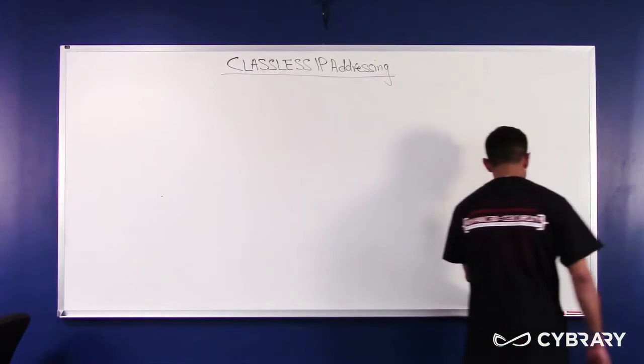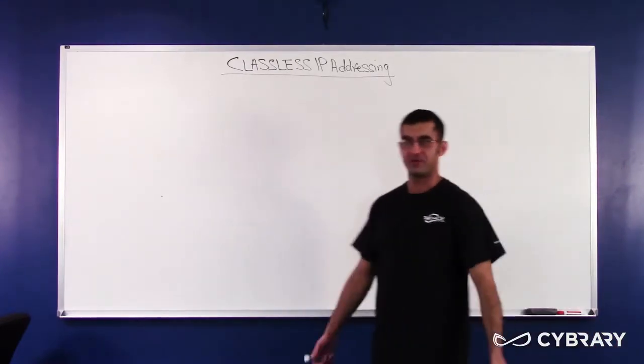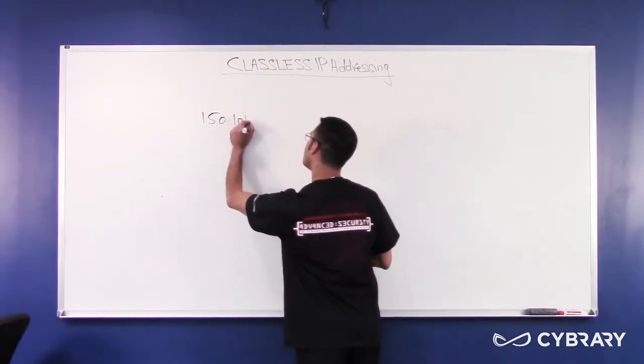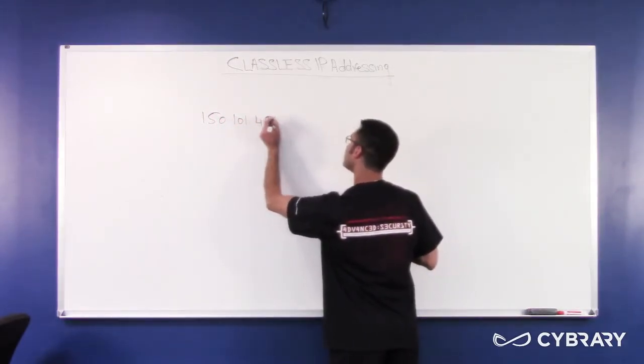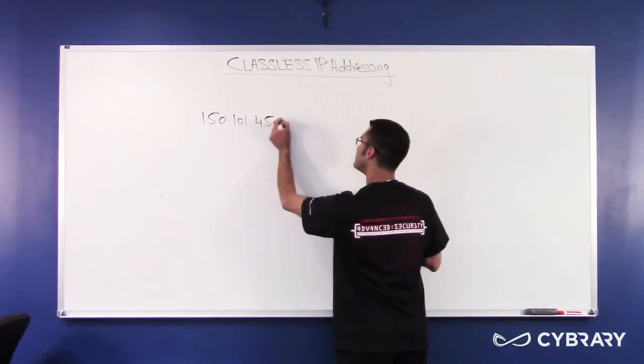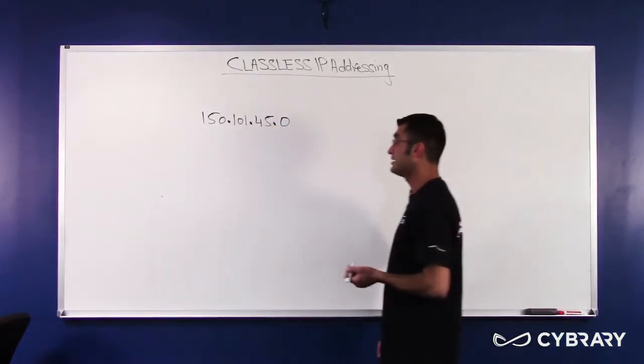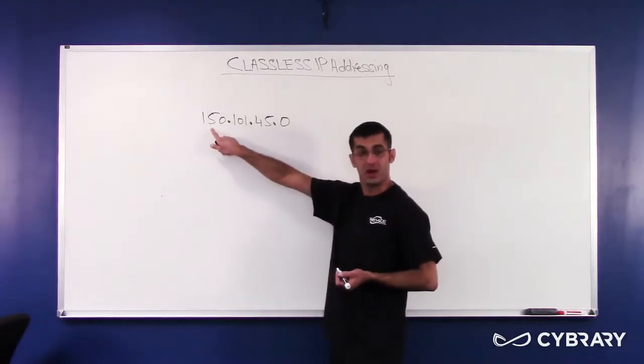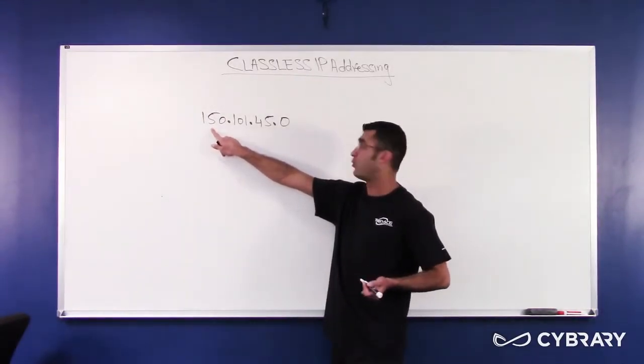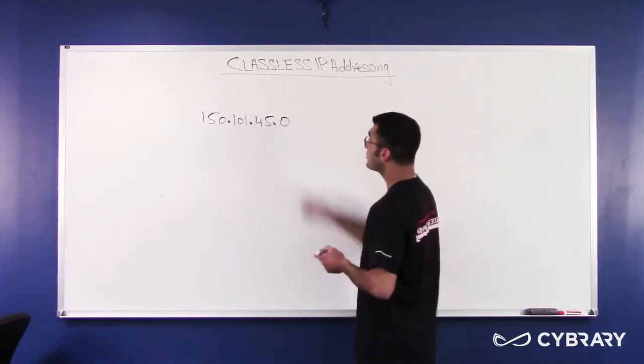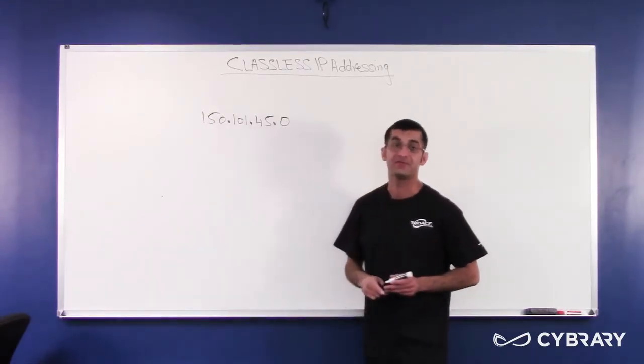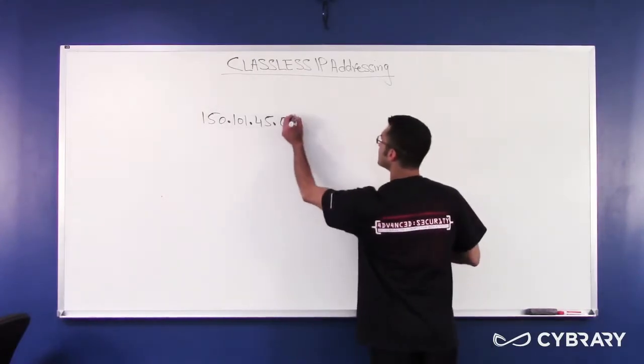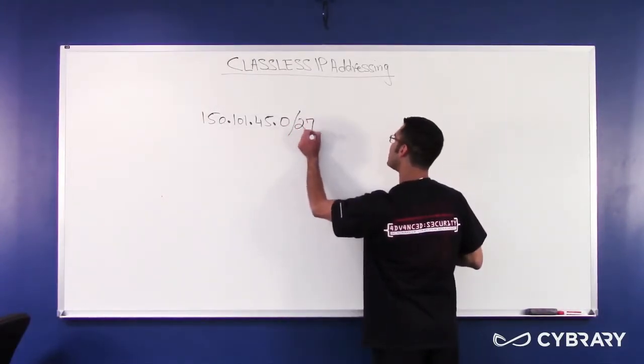So let's pretend our company needs 30 addresses. How do we do that? Let's start with an IP 150.101.45.0. Now, this technically is a class B address, because it falls within the range of between 128 and 191. So this should be a slash 16, or 255.255.0.0. What happens if I give it a slash 27 mask?